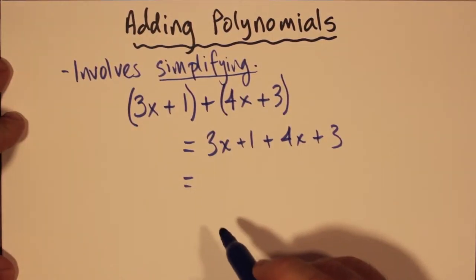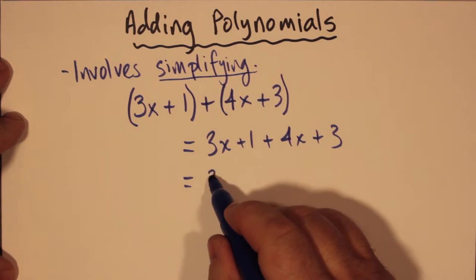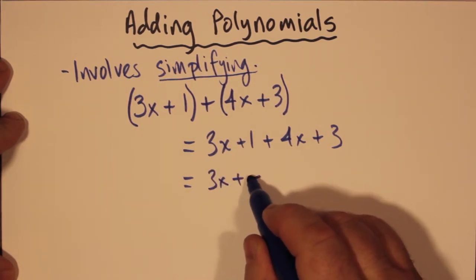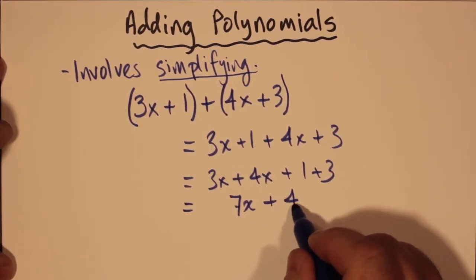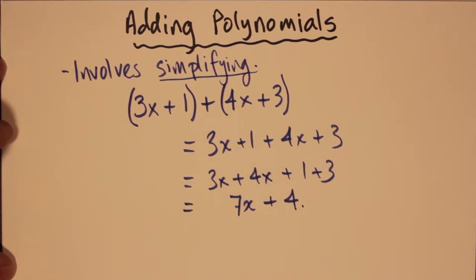And then we gather our like terms. So we gather our 3x plus 4x and then the 1 plus 3. And the 3x plus 4x makes 7x and the 1 plus 3 makes 4. So we end up with 7x plus 4. That's adding polynomials.